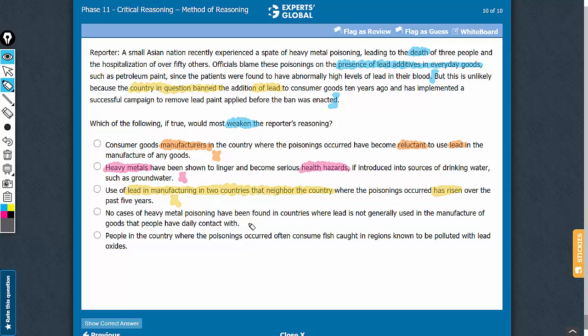Answer choice D is also a trap. Some students will think that no cases of heavy metal poisoning have been found in countries where lead is not generally used. And in this country, a spate of heavy metal poisoning has been found.